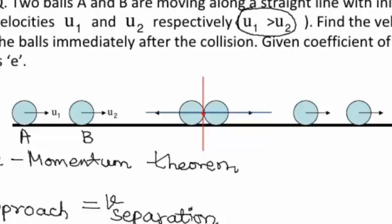The mass of ball A is m1 and the mass of ball B is m2. The velocities after collision are v1 and v2 for the two balls respectively. For the two balls to separate after collision, v1 must be less than v2.